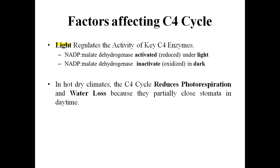One of the major factors regulating the C4 cycle is light. Light generally regulates the activity of enzymes involved in the C4 cycle. One key enzyme is NADP malate dehydrogenase — under sunlight it is activated (reduced), while in the dark it is inactive (oxidized). In hot and dry climates, the C4 cycle reduces photorespiration and water loss.